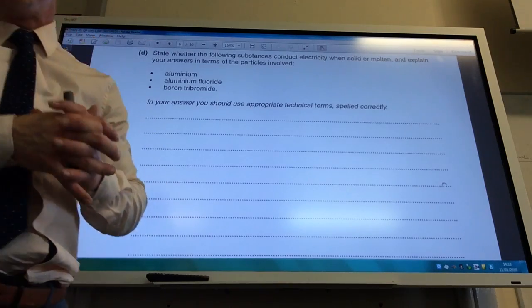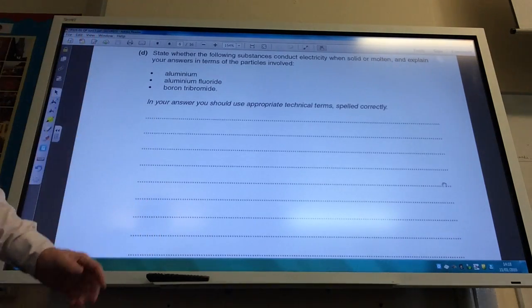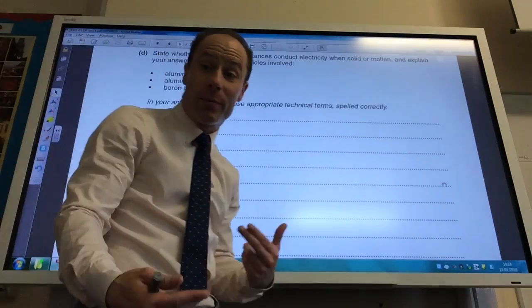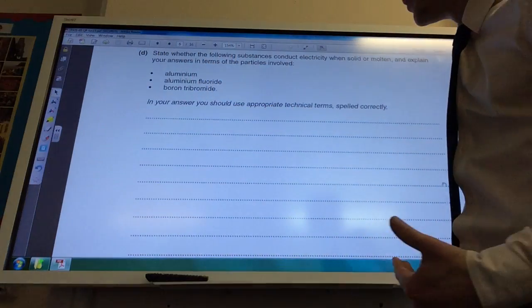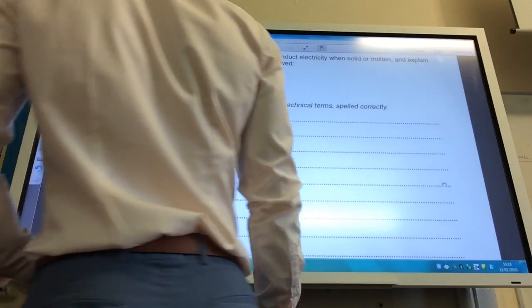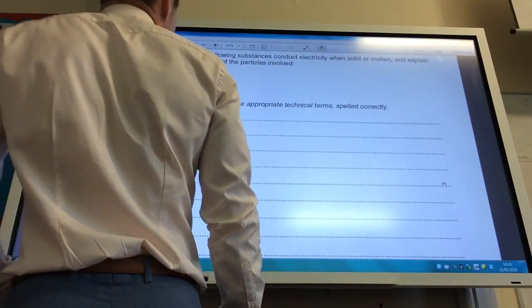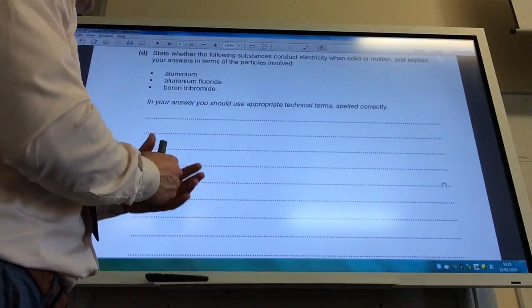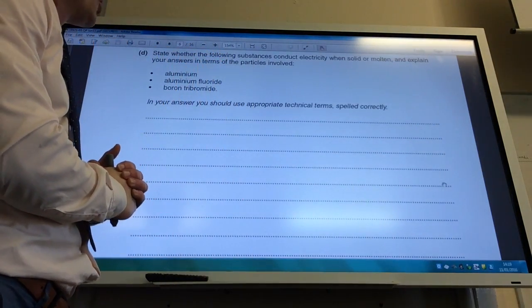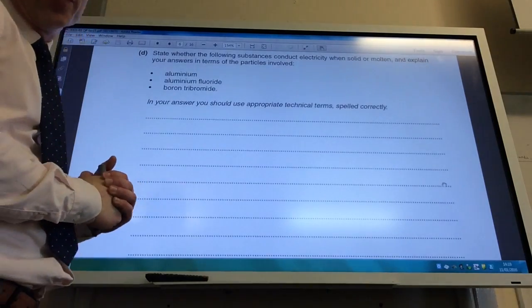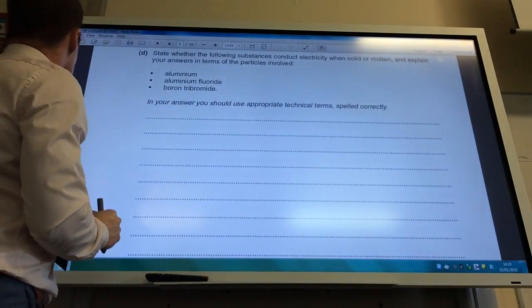Right, so this question involves quite a lot of writing. The main thing is just go through all the points, make sure you cover all the points as you go through. The first one wants me to explain or state whether the following substances conduct electricity when solid or molten and explain your answers in terms of the particles involved.